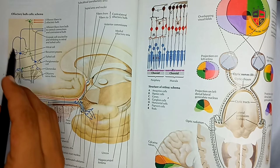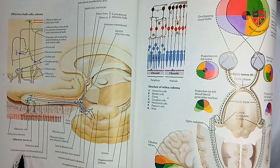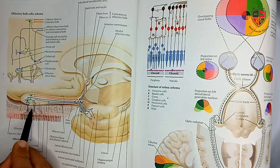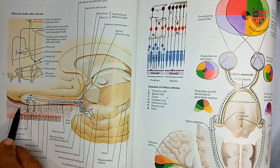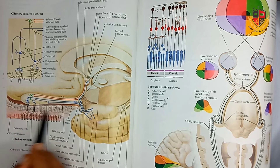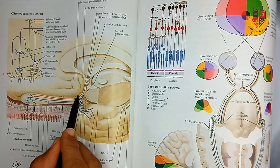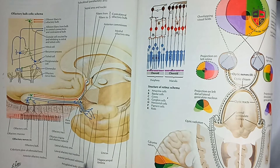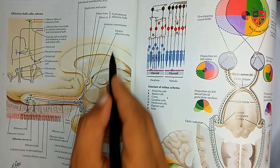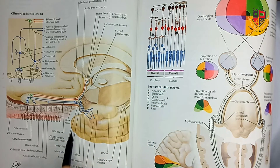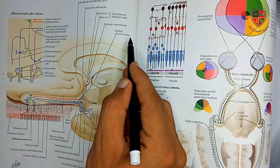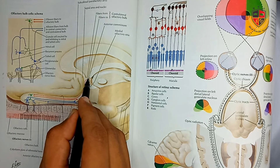The function of the olfactory nerve is to sense smell. The olfactory nerve starts from the olfactory mucosa and passes through the foramina of the cribriform plate of the ethmoid bone, synapsing with the anterior olfactory nucleus to form the olfactory tract. The olfactory tract divides into the lateral olfactory stria, terminating at the amygdaloid body, piriform lobe, and uncus, and the medial olfactory stria, terminating at the septal nuclei and anterior commissure.